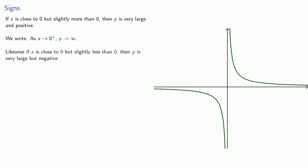Likewise, if x is close to 0 but slightly less than 0, then y is very large but negative. So we write: as x → 0⁻ (that's our minus, meaning stays a little less), y → -∞.